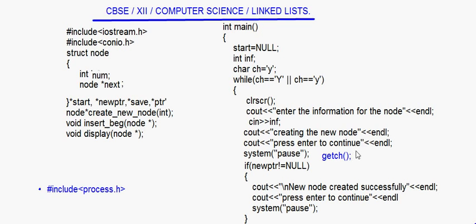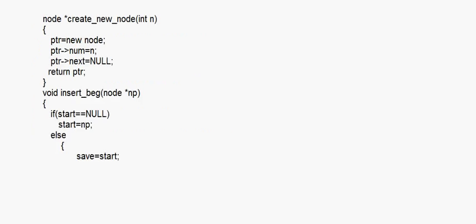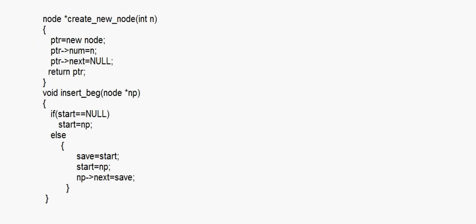After this system pause or getch, first of all we have to create the new node. We write: new_ptr = createNewNode(inf). So here we are calling the function createNewNode and inf is the value taken from the user. Suppose the user enters the value 11 — so this inf, which is 11, is passed to createNewNode.